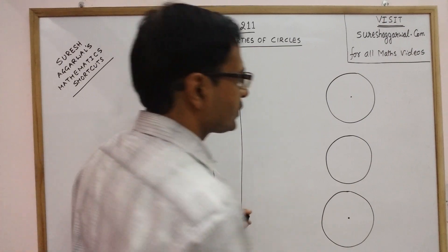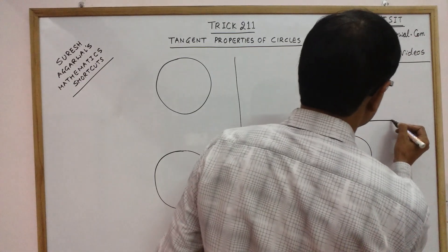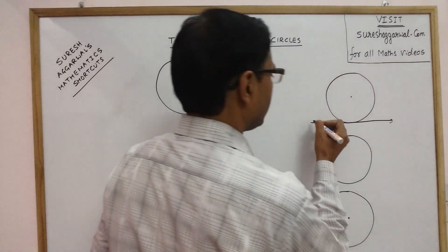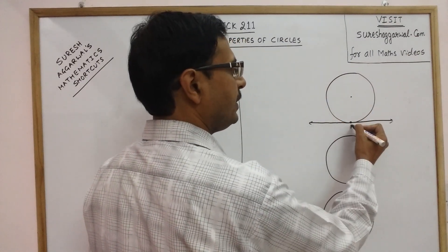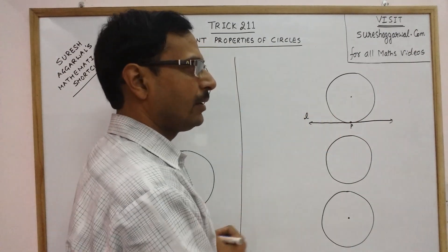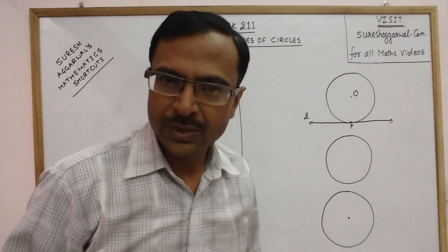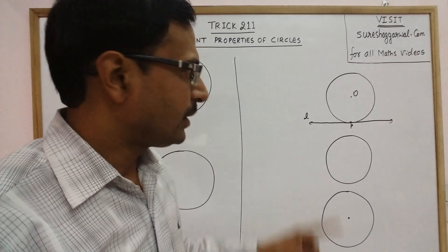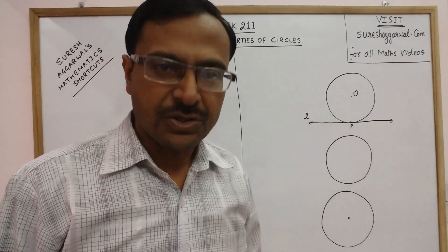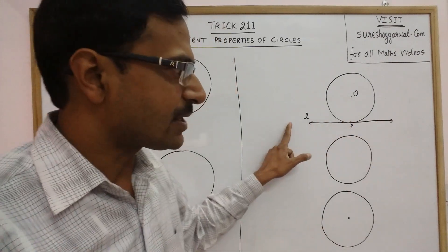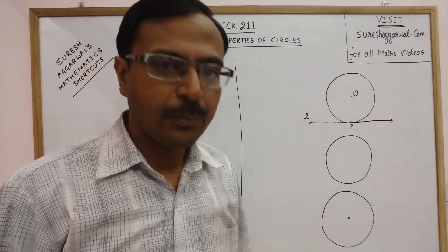Now suppose if I draw a line like this — this line is touching the circle at this point P. Say line L, and the centre of the circle is O. So this line L is known as a tangent. A tangent touches the circle at a single point.